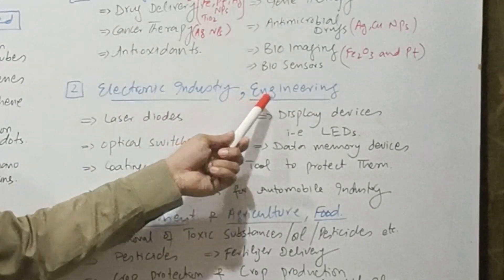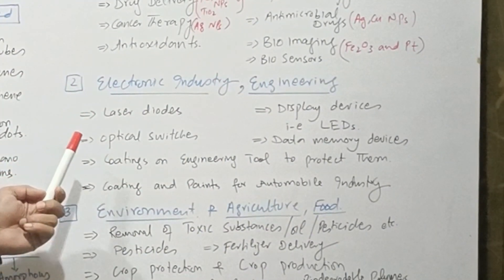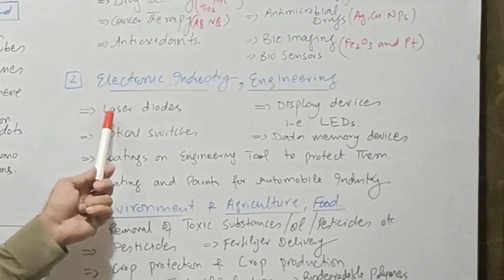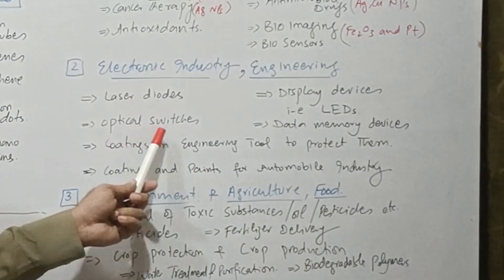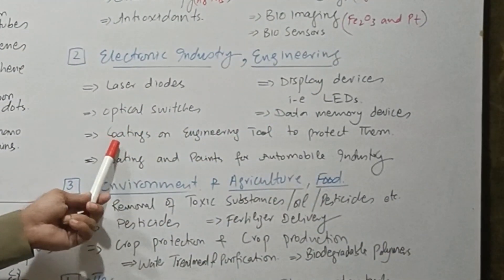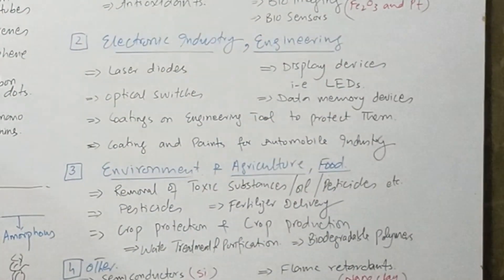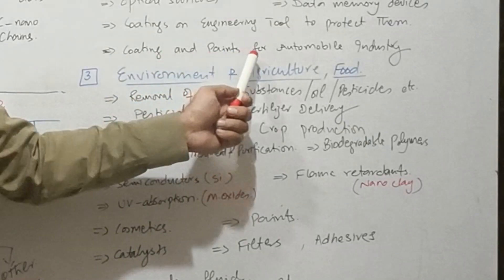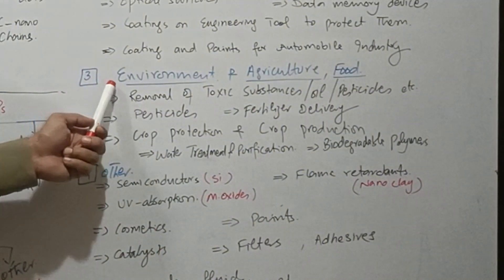Second, electronic industry and engineering. In these fields we also use nanoparticles, for example for the preparation of laser diodes, display devices, optical switches, data memory devices, coatings on engineering tools to protect them, and coatings and paints for automobile industry.